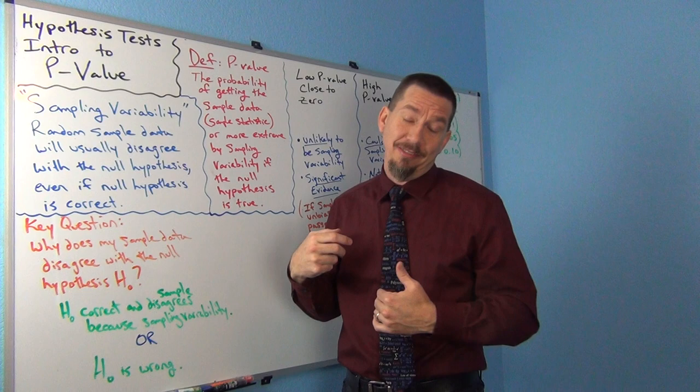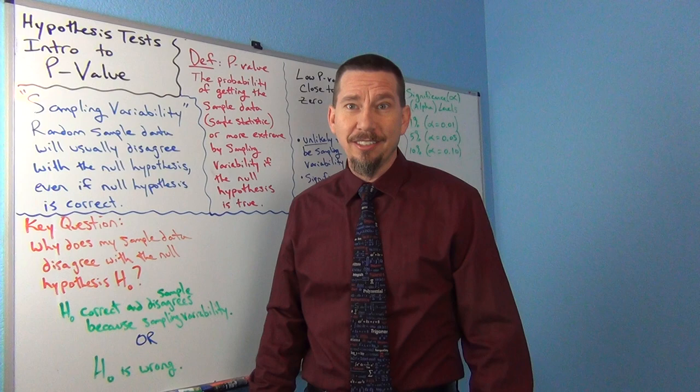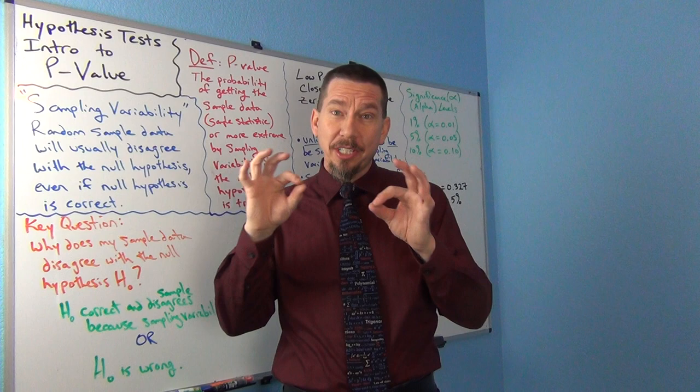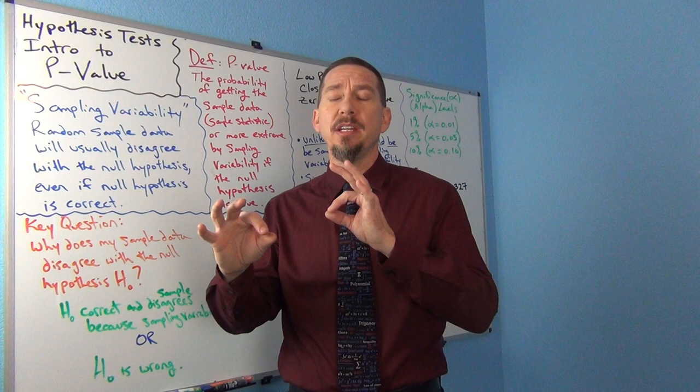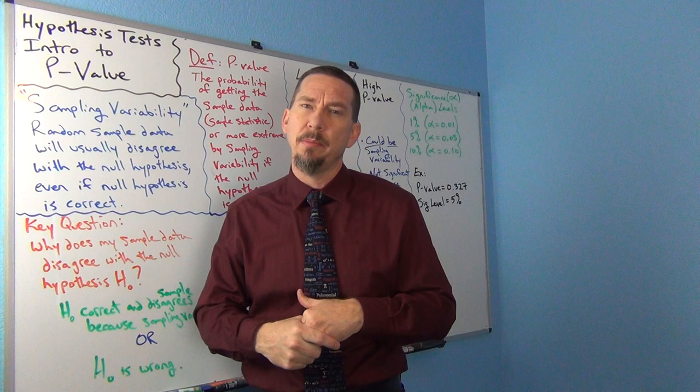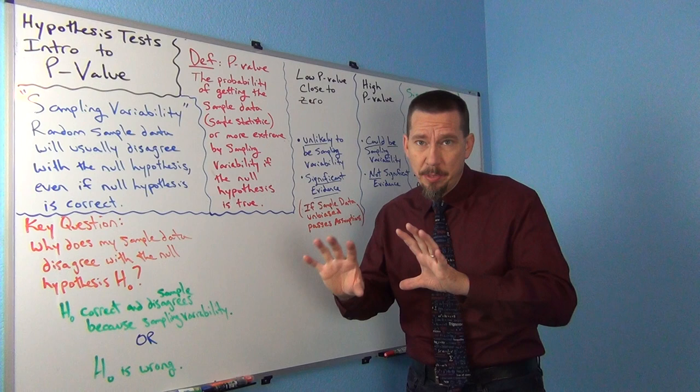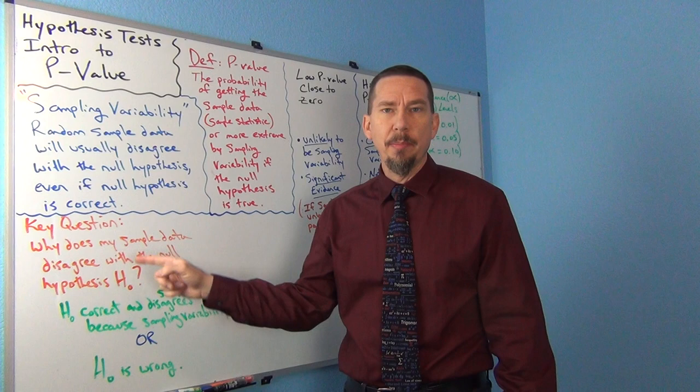So that's a problem because the null hypothesis might be correct in real life. Maybe that statement about the population is actually correct, but our sample data still disagrees with it. And we're like, well, how am I supposed to know if the null hypothesis is right or wrong? That's kind of the problem. So sampling variability becomes a real key issue here, and this is where p-value steps in.